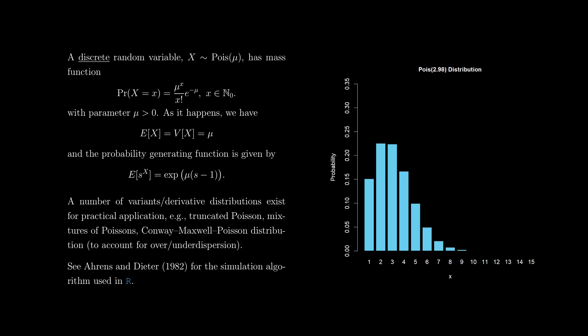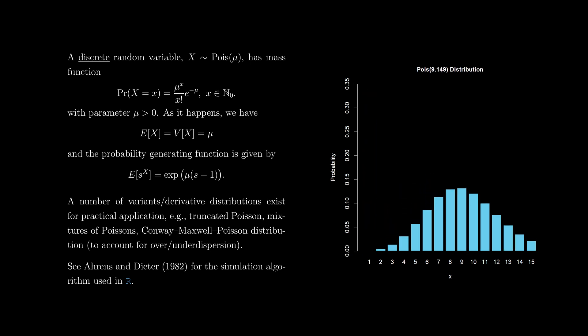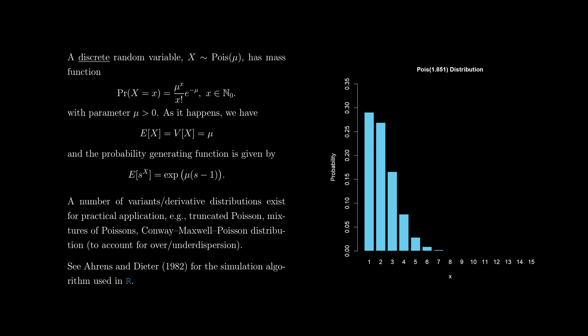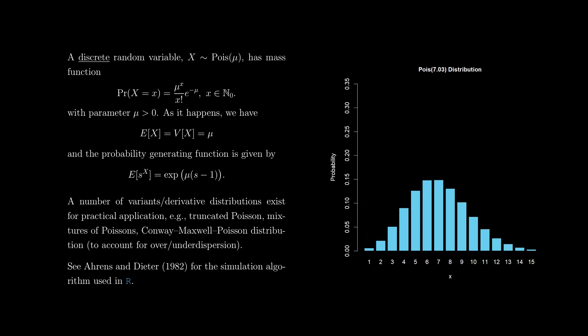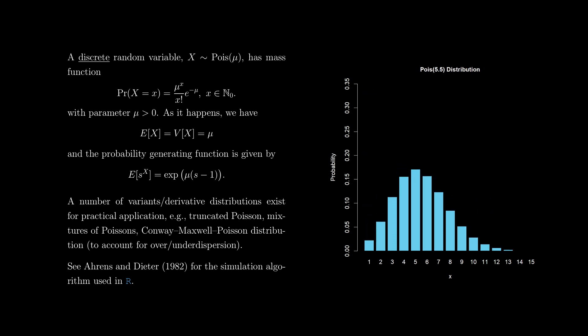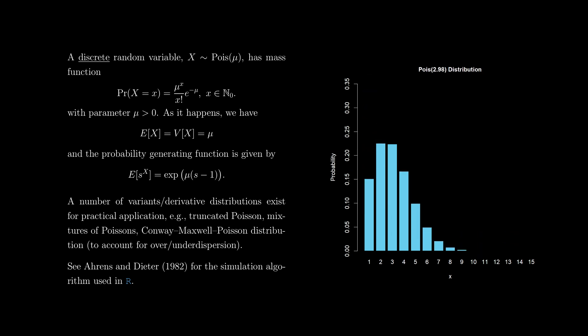A discrete random variable x distributed Poisson with parameter mu has mass function mu^x / (x! * e^mu). It has support on the naturals including zero, with parameter mu > 0. For this distribution, the mean equals the variance equals mu — as you might have guessed from our choice of parameter. The probability generating function — note, because we're dealing with a discrete random variable — is given by e^(mu*(s−1)).